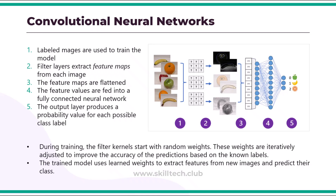One of the most common machine learning model architectures for computer vision is a convolutional neural network, formerly known as CNN. CNNs use filters to extract numeric feature maps from images and then feed the feature values into a deep learning model to generate a label prediction. For example, in an image classification scenario, the label represents the main subject of the image. You might train a CNN model with images of different kinds of fruits — such as apples, bananas, and oranges — so that it can predict the type of fruit given a new image.